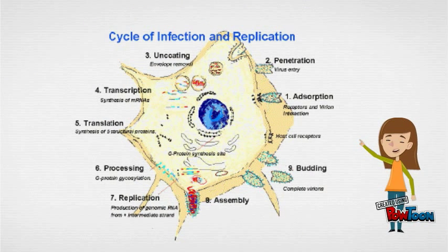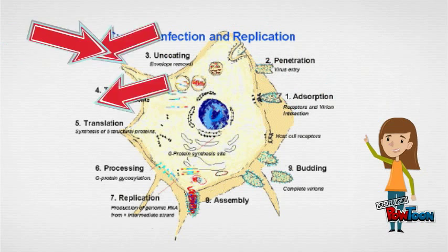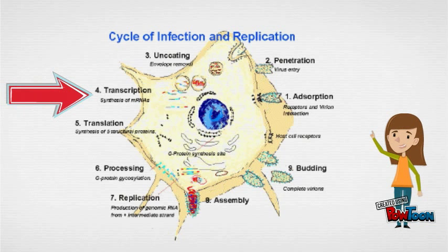The rabies virus replicates in a cycle as shown. First, the virus enters the host cell through the endosomal transport pathway. Second, viral membranes fuse to the endosomal membranes, causing the release of viral RNP into the cytoplasm. Then, the L-polymerase transcribes the genomic strand of rabies RNA.